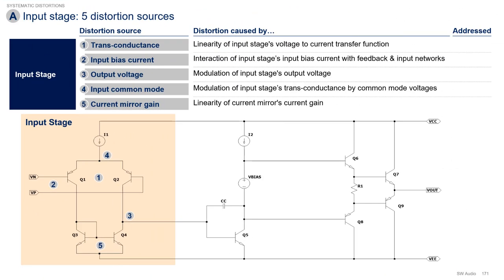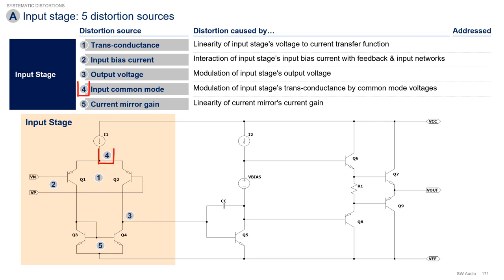For the input stage, we have five distortion sources. First, transconductance, which relates to the linearity of the input stage's voltage-to-current transfer function. Second, input bias current, which relates to the interaction of the input stage's input bias current with the feedback and input networks. Third, output voltage, which relates to non-linearities resulting from the modulation of the input stage's output voltage. Fourth, the input common mode, which relates to the modulation of the input stage's transconductance by common mode input voltages. And finally, current mirror gain, which relates to the linearity of the current mirror's current gain.